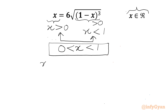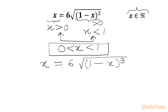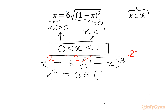Now I will write our equation: x equals 6 times the square root of (1 minus x) cubed. Let us consider squaring both sides — we apply power 2 to both sides. We can cancel the square root with the square on the RHS, so we get x squared equals 36 times (1 minus x) cubed.